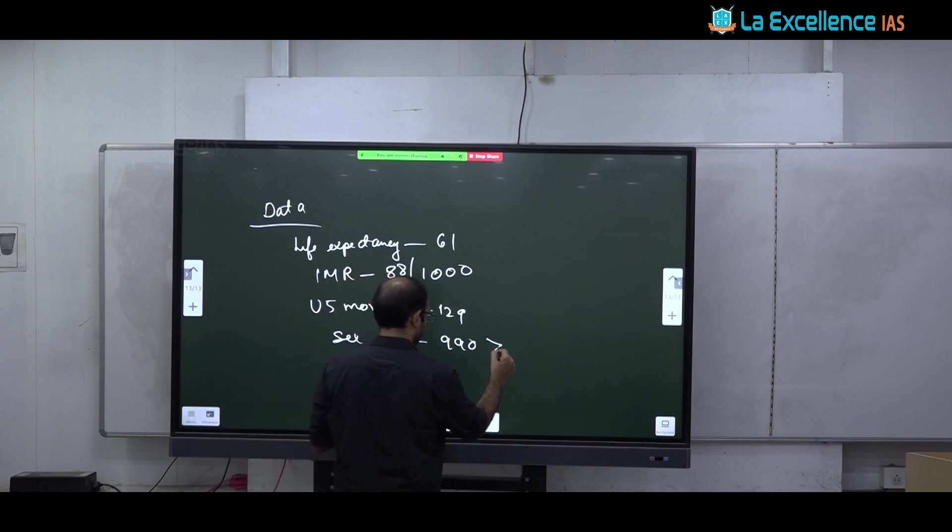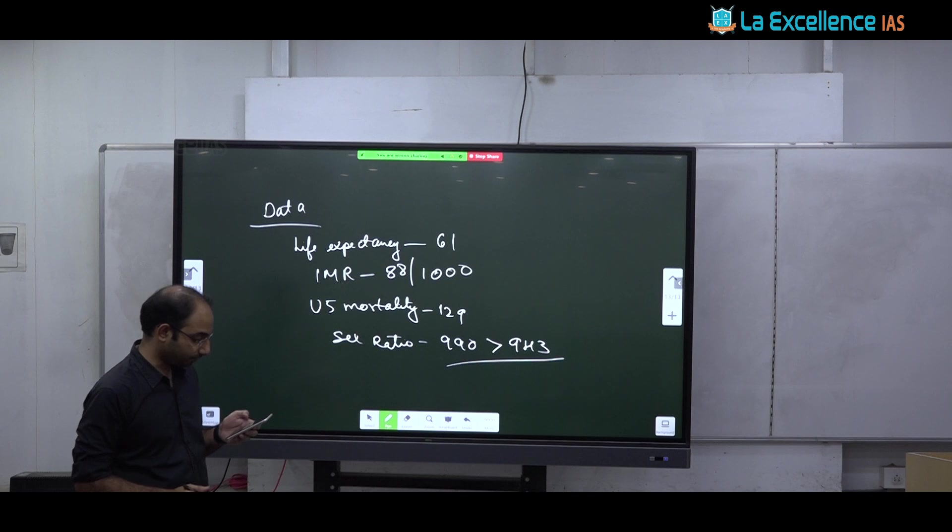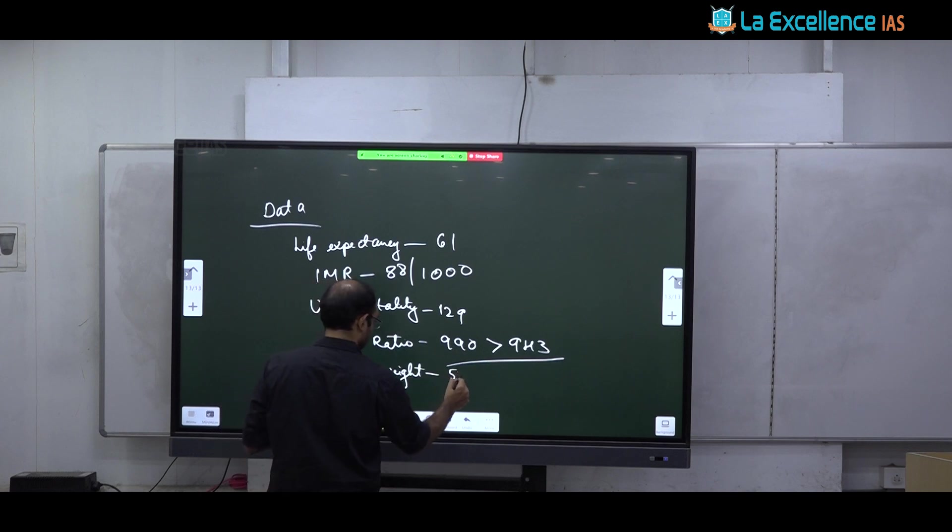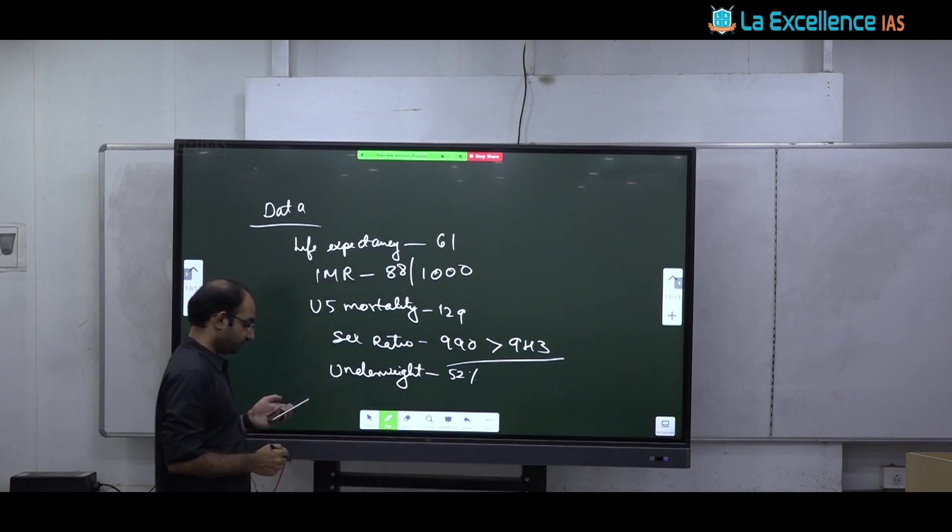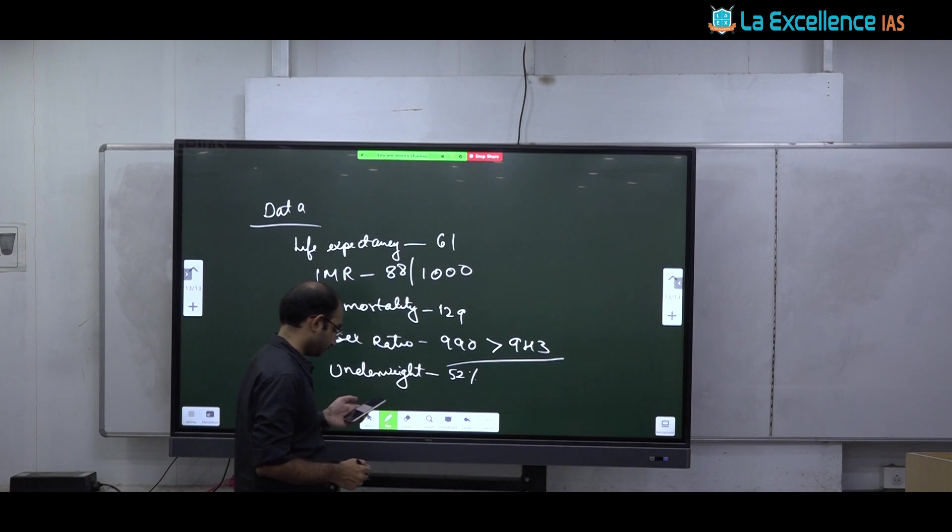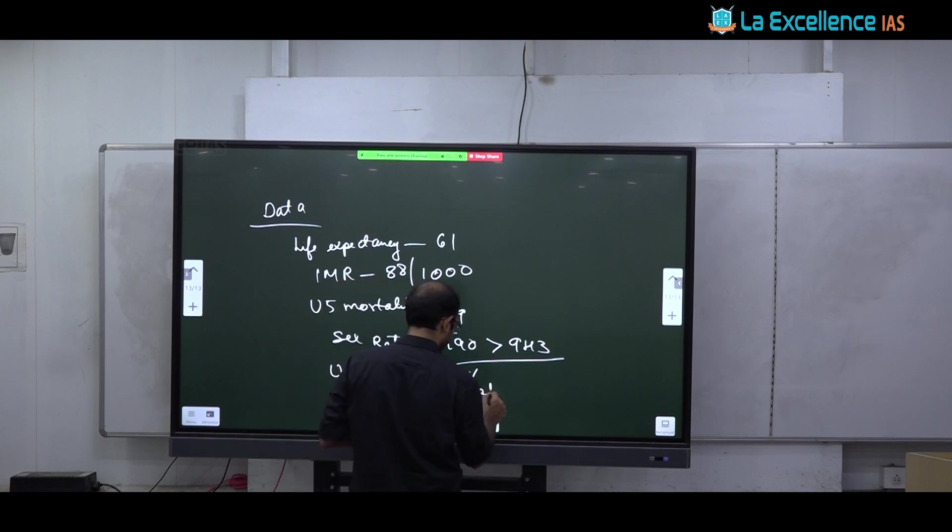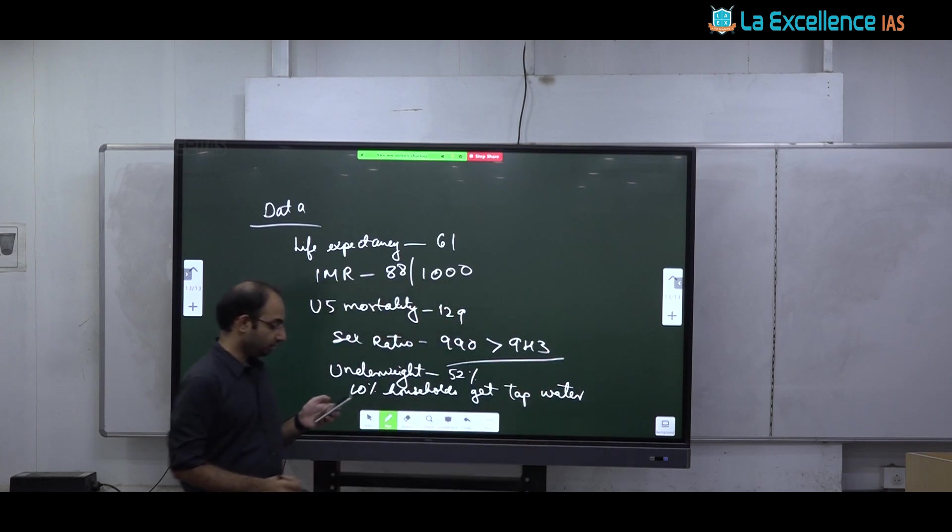So they have better sex ratio. At the same time, they also have high malnutrition. The proportion of underweight children is 52 percent of children are underweight. And for poor social determinants, you can use the fact that only 10 percent of households get tap water. So you can use all of these. In addition, you can also cite that only 32 percent of tribal women have access to institutional deliveries. That is all. So if you can write this data, that will make your answer better.